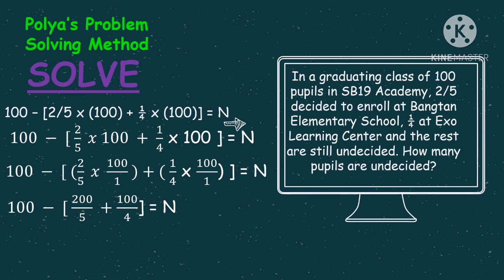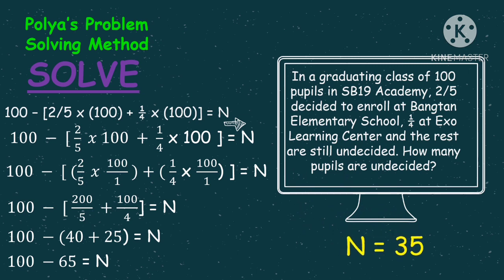Multiply 2 by 100 to get 200, and 5 times 1 is 5. Plus, multiply 100 times 1 is 100, and 4 times 1 is 4. Then kunin natin yung sum — 200 divided by 5 is 40. Plus, 100 divided by 4 is 25. Then get the sum of 40 and 25, so the answer is 65. Then isasubtract natin yung 65 sa 100 — the number of undecided pupils is 35.